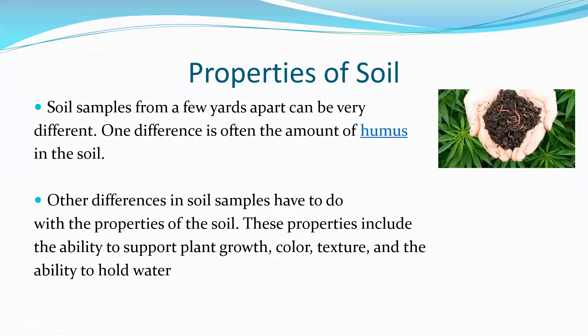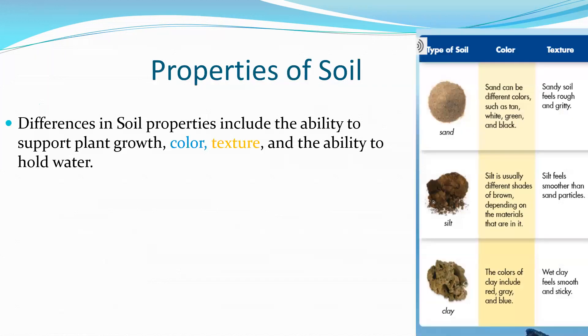Let's talk about properties of soil. Soil samples from a few yards apart can be very different. One difference is often the amount of humus in the soil. Other differences in soil samples have to do with the properties of soil. These properties include the ability to support plant growth, the color, the texture, and the ability to hold water.